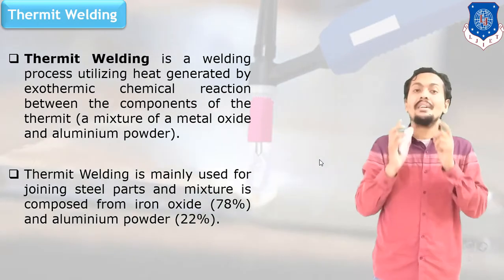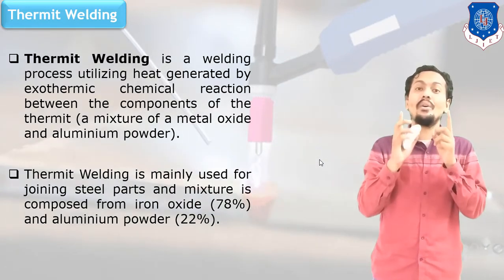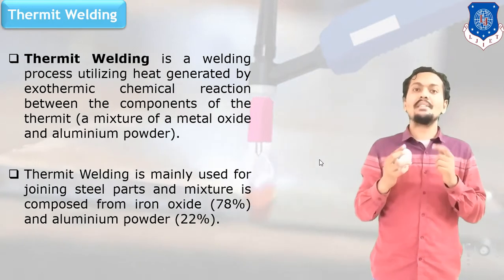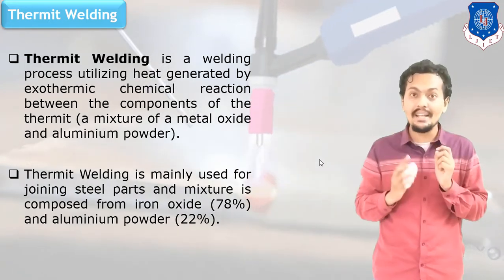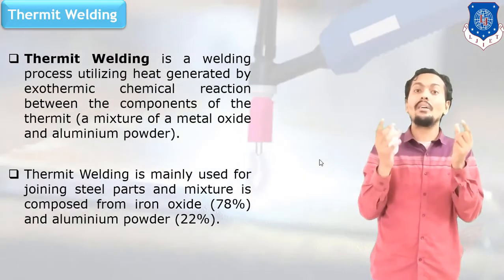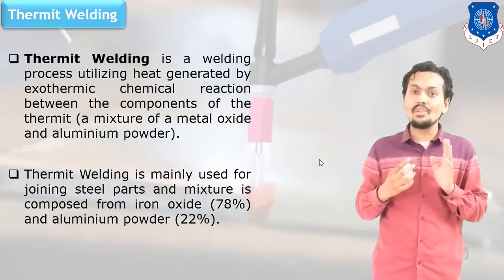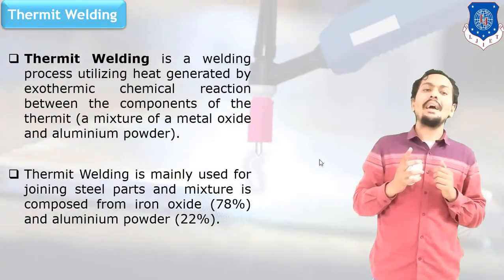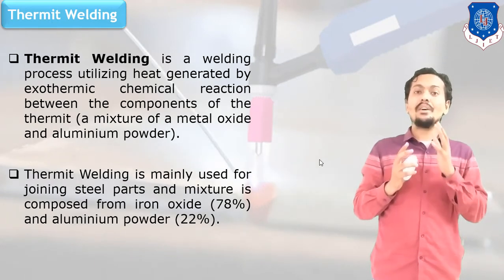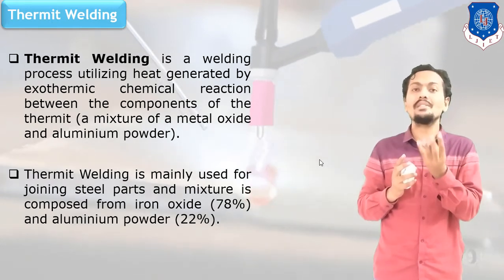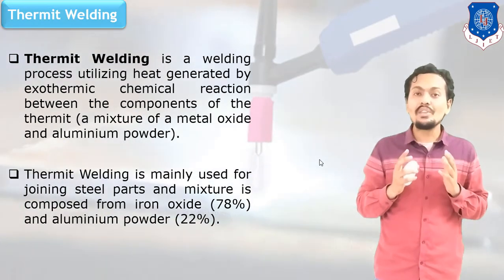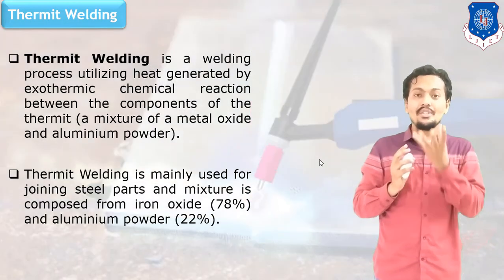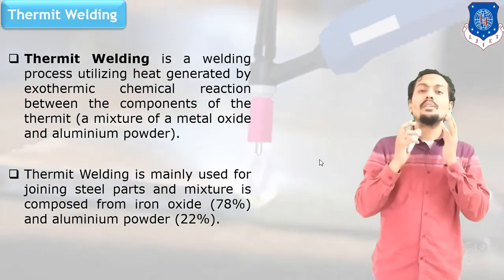Next, here I have mentioned the thermite welding process. This process is very useful in maintenance of railway tracks. It is a Special Welding Process, and this process is used for maintenance or joining of railway tracks in case of any failure. In thermite welding, aluminum is used along with iron oxide. This mixture is known as the thermite mixture, which is nothing but iron oxide and aluminum.